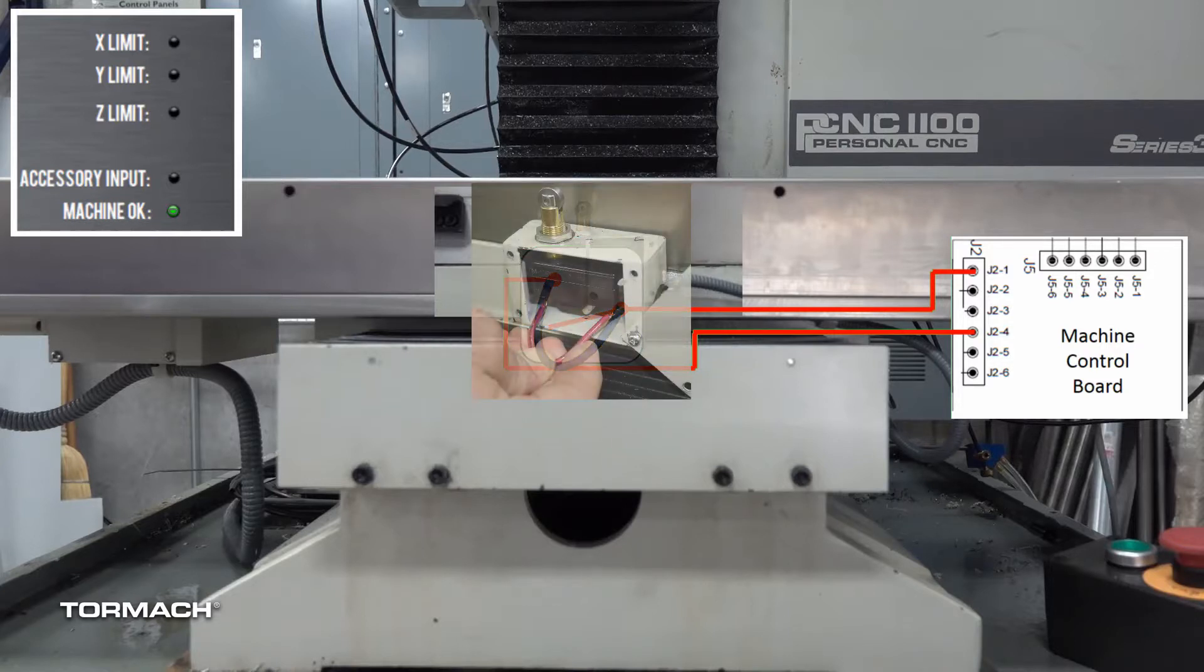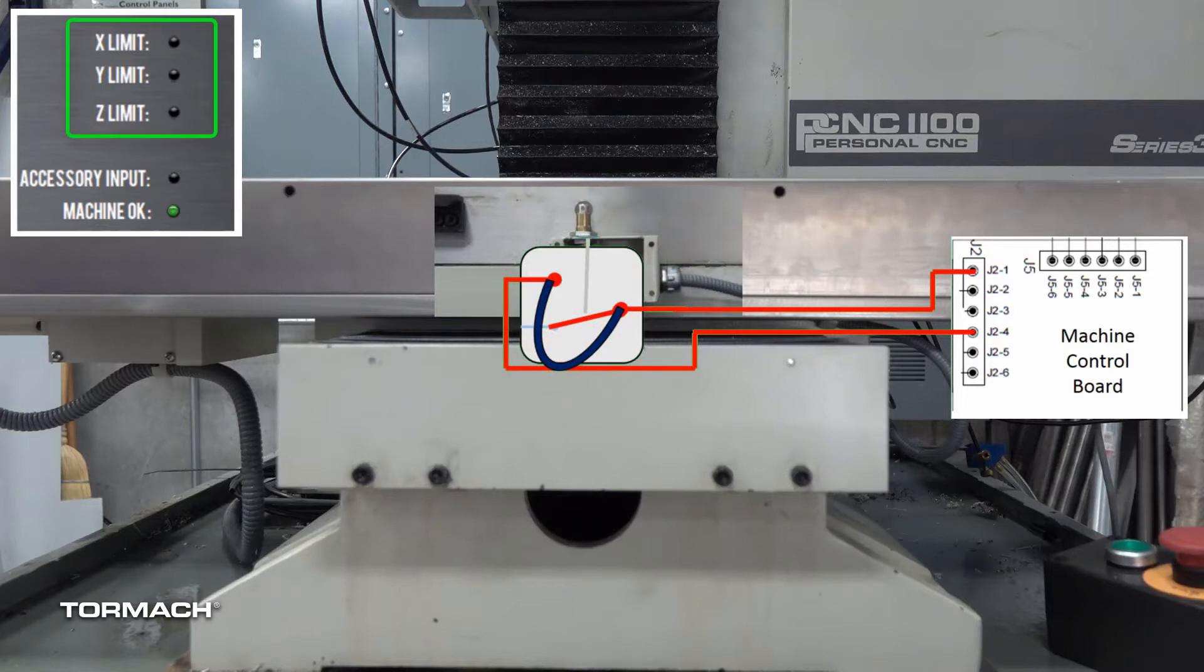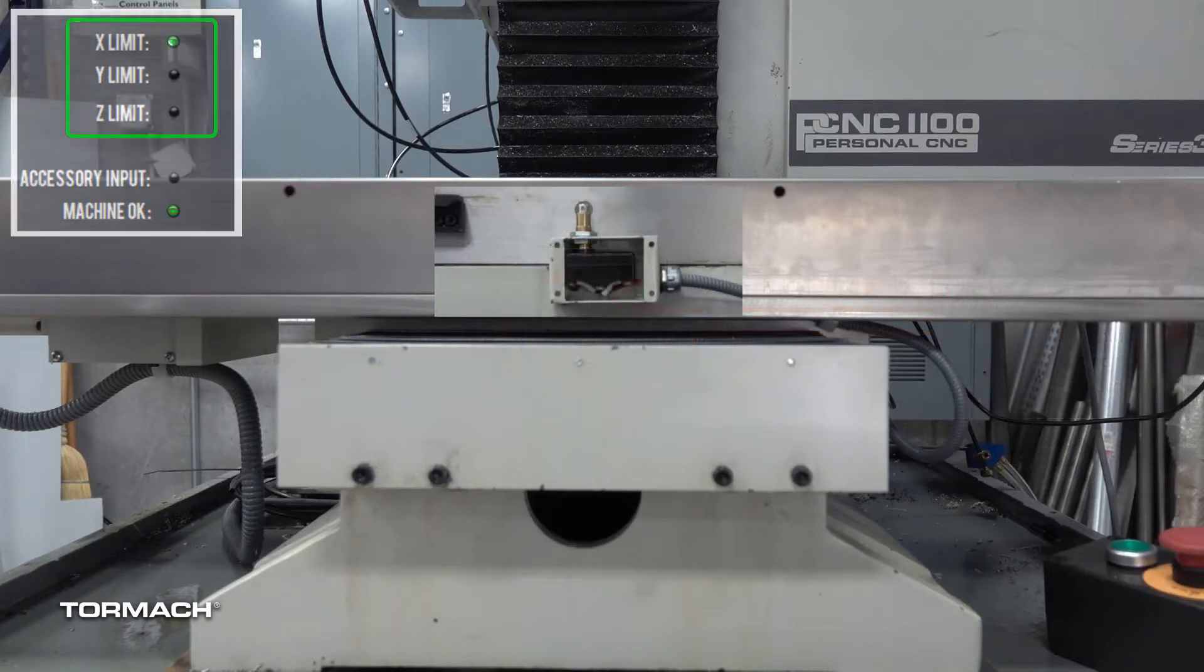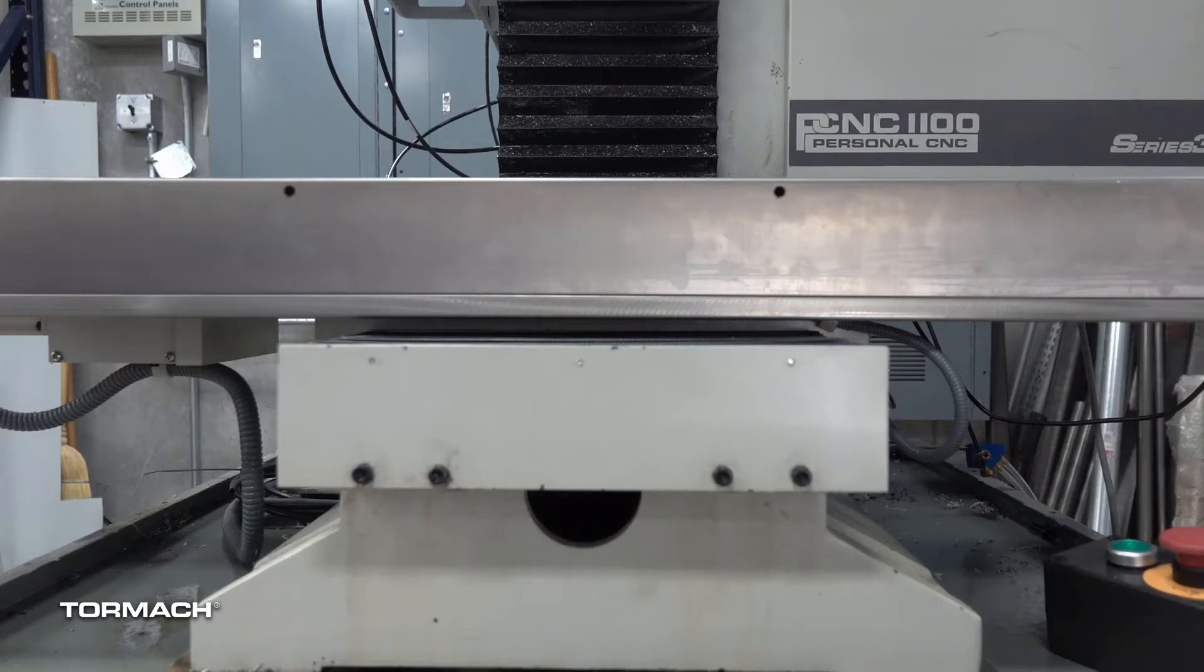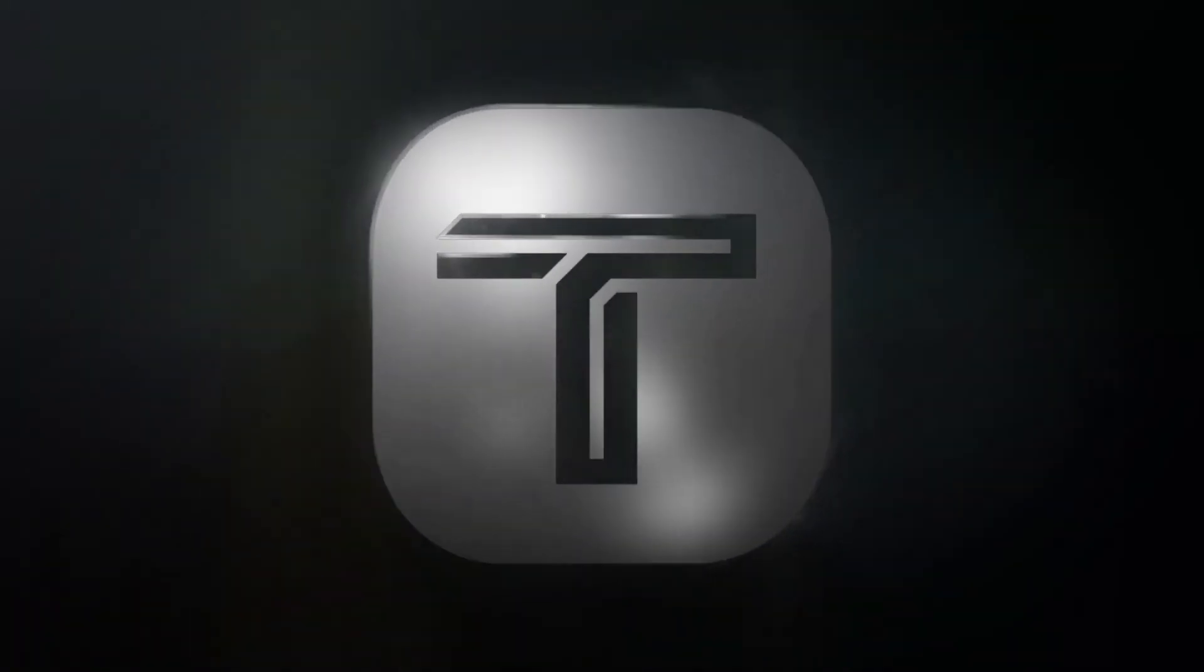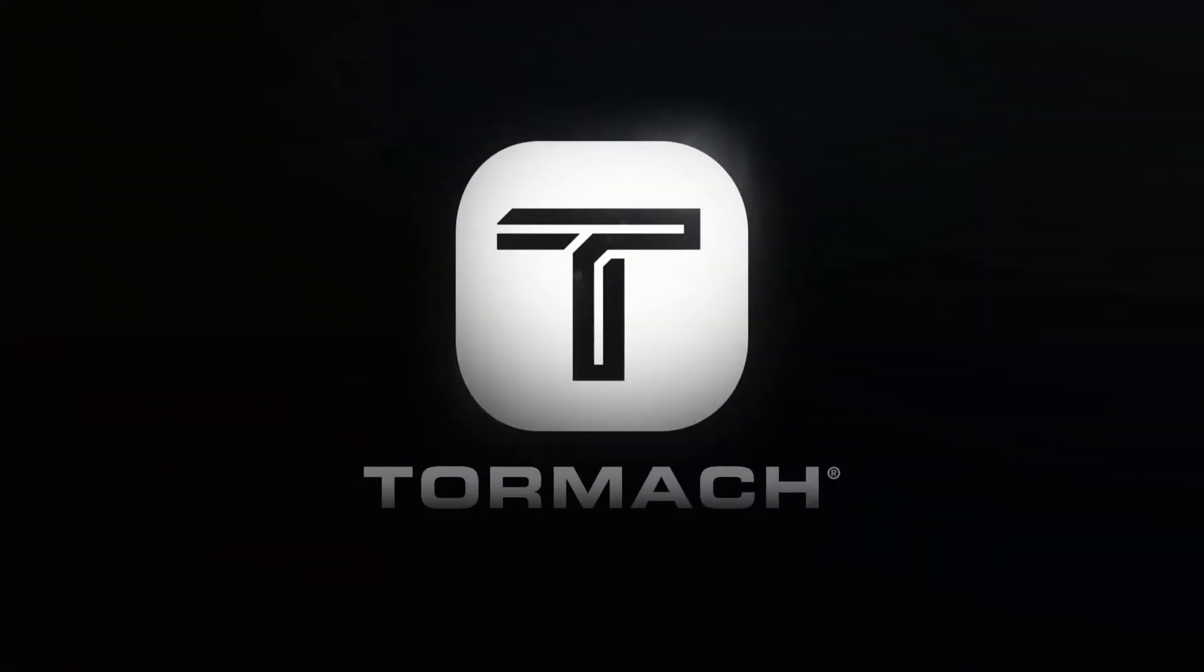If the PathPilot limit switch indicator goes out with the jumper in place, we can isolate the machine control board, the limit switch, or the circuitry as a potential problem.